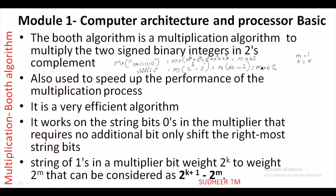This is similar to the decimal multiplication of any number p × 99. We can simplify it as p × (100 - 1). So 99 is replaced with 100 minus 1. That is the method of replacing a series of 1s in the binary multiplier string with a subtraction, improving the speed of operation.